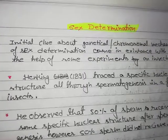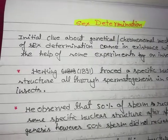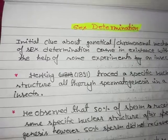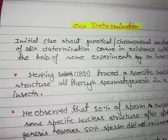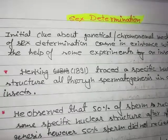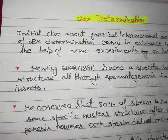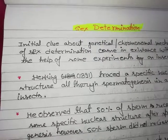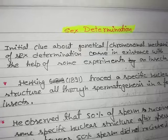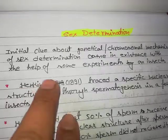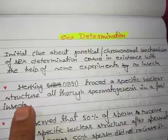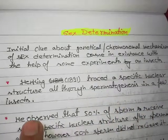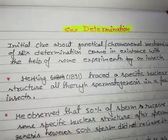This was in the concept of 1891. Henking made a series of experiments on insects, and while he was observing the concept of cell division or spermatogenesis, Henking traced a specific nuclear structure all through the spermatogenesis in a few insects.